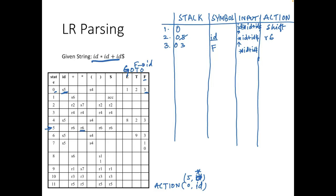Now the top of the stack is 3 and the current input symbol is *. We look up action[3, *] — it is r4, reduce by rule 4. Rule 4 is T → F. So F is reduced to T. State 3 is popped; the new top is 0. We look up goto[0, T] — it gives 2, so 2 is pushed onto the stack. Input remains the same.